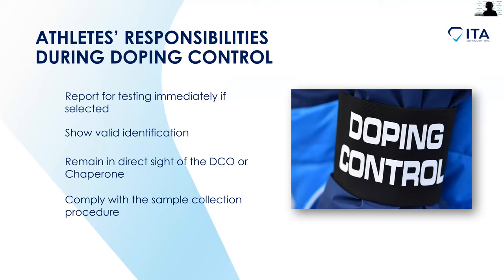Now we want to move on to looking at the athlete responsibilities and rights during doping control. The responsibilities of the athlete are to report for testing immediately if selected, as the athlete did in the video; to show valid identification — this can be your passport, or during a major games an accreditation is accepted; to remain in direct sight of the doping control officer or chaperone at all times; and to comply with the blood sample collection procedure — the DCO or BCO will instruct you step by step.